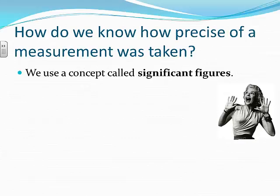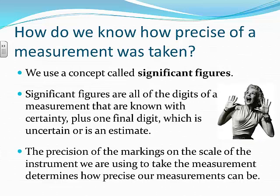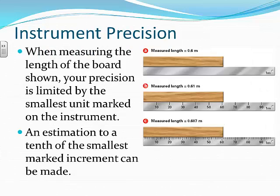Now we get into significant figures — this is how we know how precise a measurement was. Significant figures are all the digits of a measurement known with certainty, plus a final uncertain or estimated digit. In science, unlike in math, extra digits indicate a higher degree of precision. For example, reporting 30.0 centimeters indicates measurement to the nearest tenth, whereas 30 centimeters sounds like it was measured only to the nearest whole centimeter.